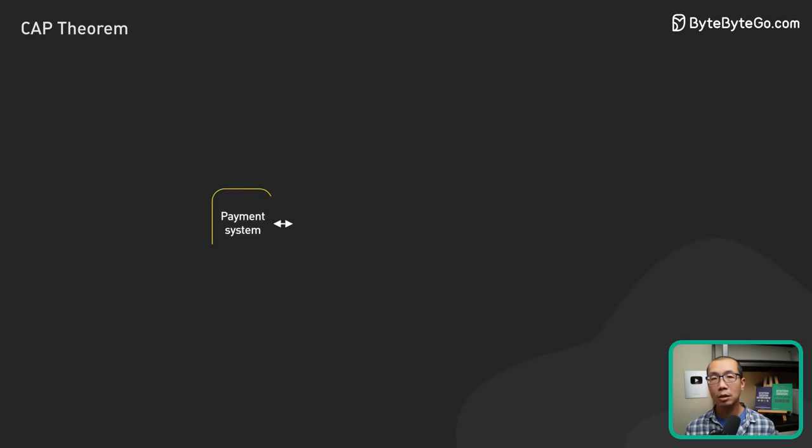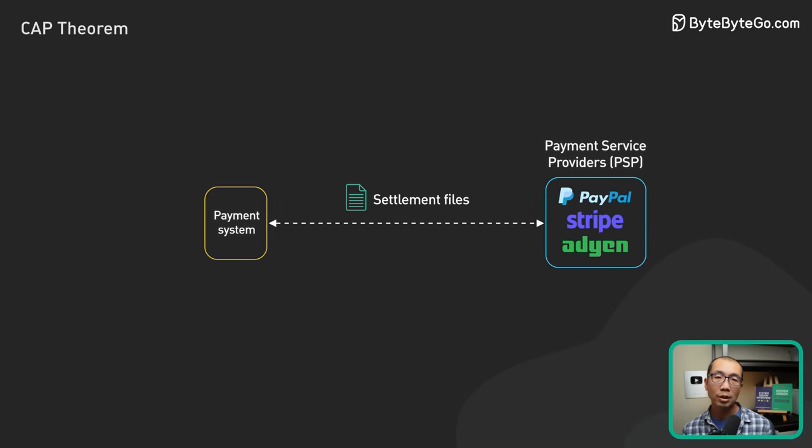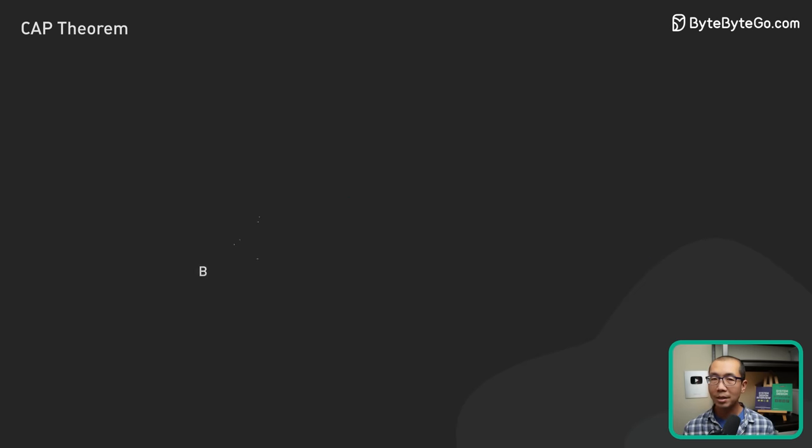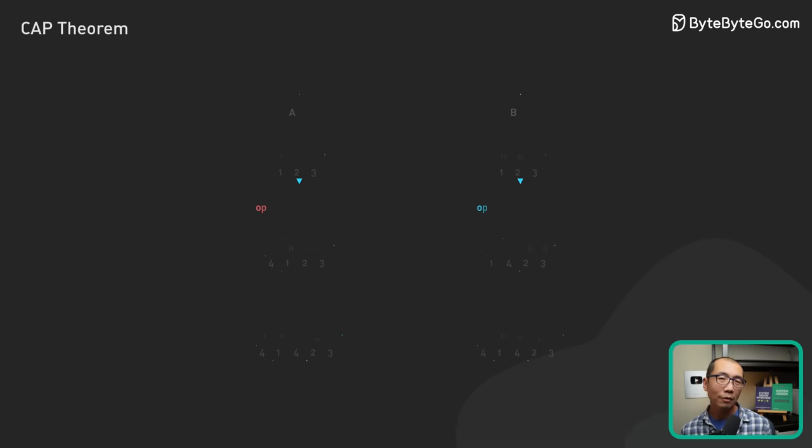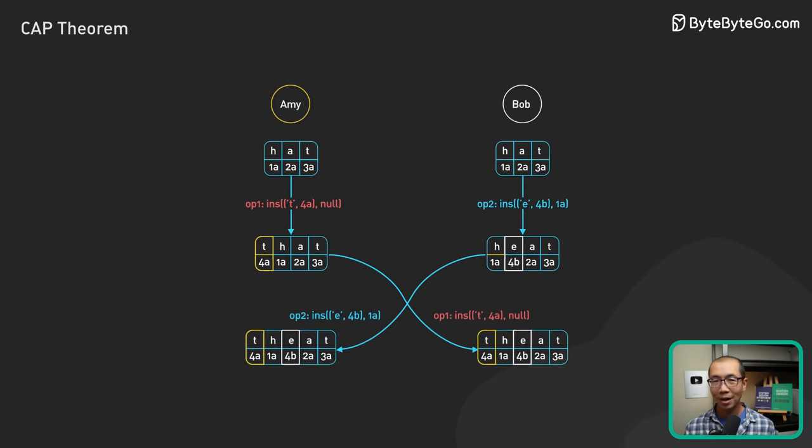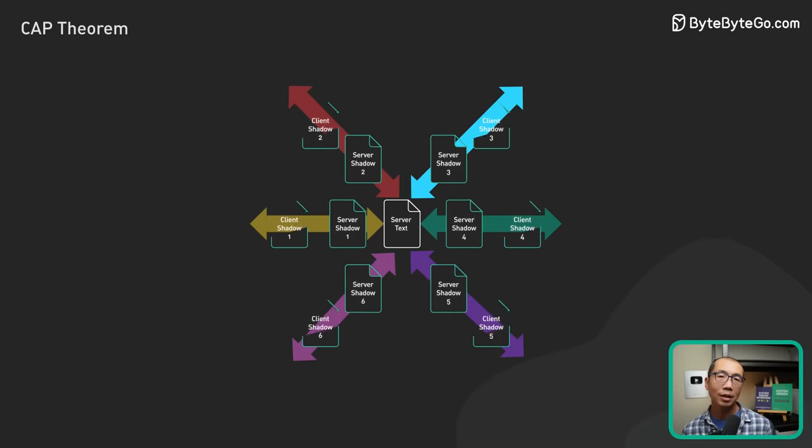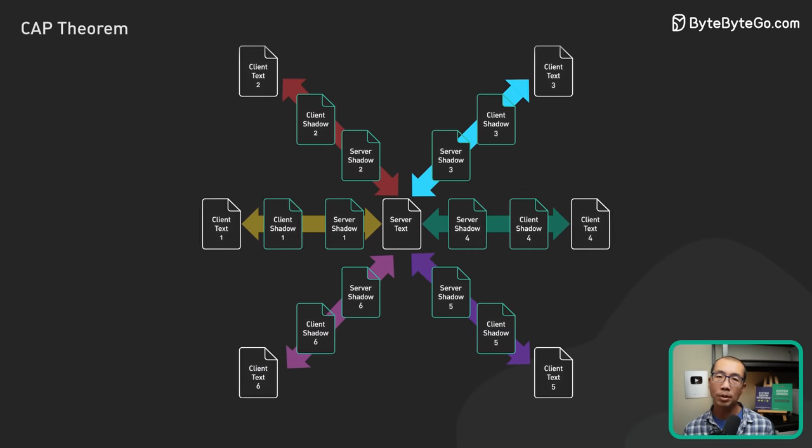It is worth noting that in the real world, reconciliation after a network partition could get very messy. The bank example above is simple to reconcile. In real life, the data structures involved could be complex and challenging to reconcile. A good example of a complex data structure is Google Docs. Resolving conflicting updates could be tricky.